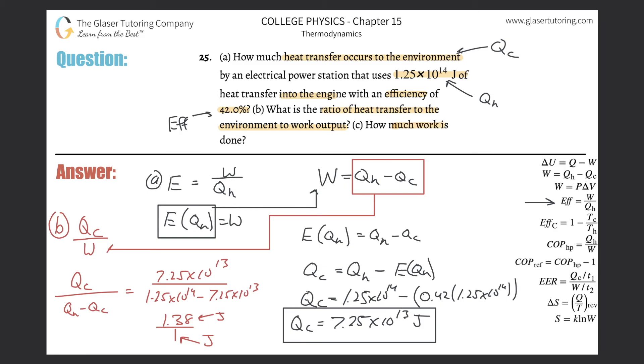We can now just use this formula: plug in Q sub h and subtract Q sub c. Your Q sub h value was 1.25 times 10 to the 14th minus your Q sub c value which is 7.25 times 10 to the 13th. There's always other ways to do this too. The work here, this is part c, would be equal to 5.25 times 10 to the 13th. That is it.